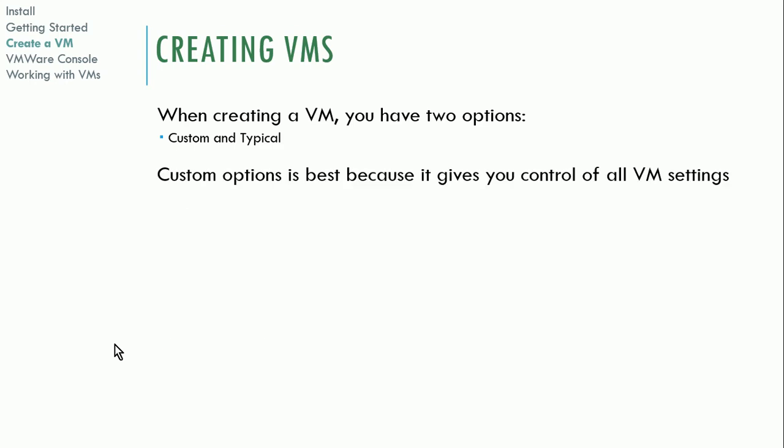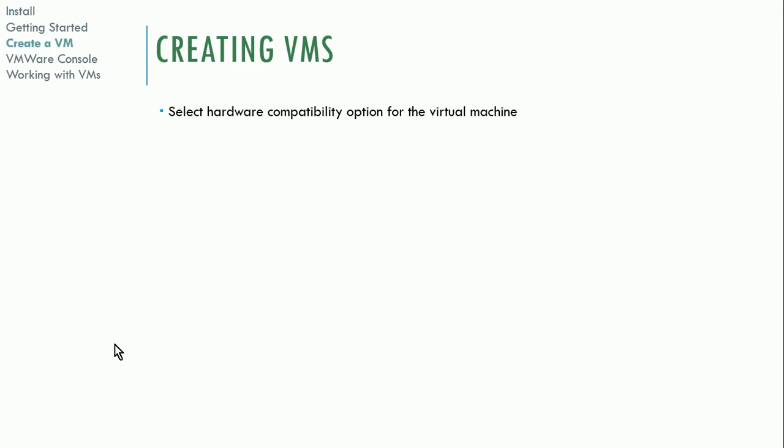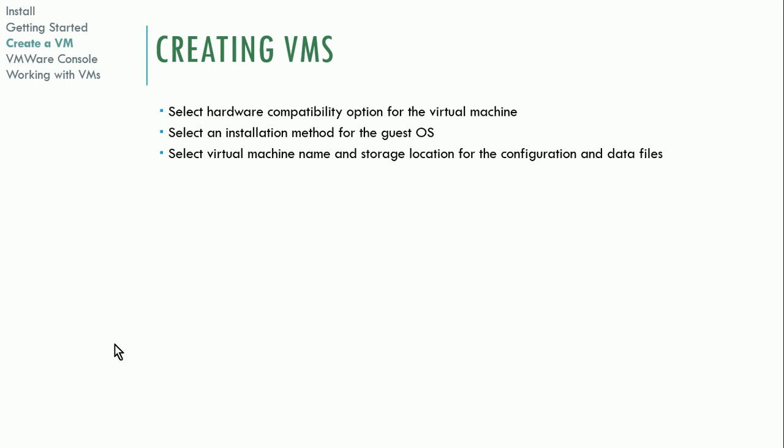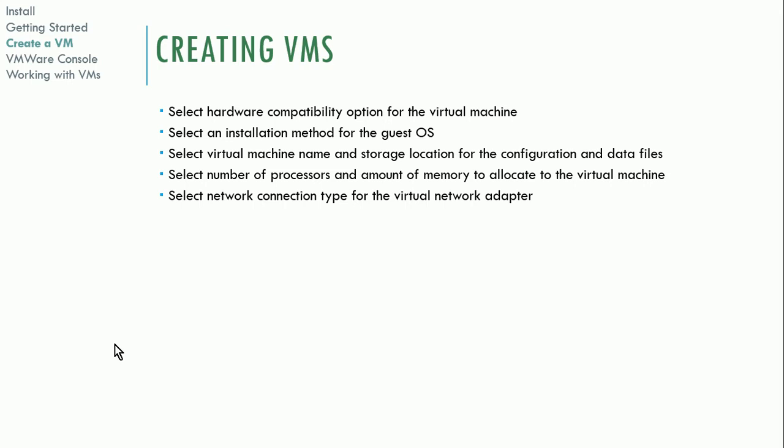When you create a VM, you have two options: custom and typical. The custom option is best because it gives you control of all the settings. The typical option automatically creates some settings based on the operating system you choose. You'll select the hardware compatibility option, an installation method for the guest OS (typically an ISO file or a CD/DVD drive), the virtual machine name, storage location, number of processors, amount of memory, network type, and storage driver type (IDE or SCSI).